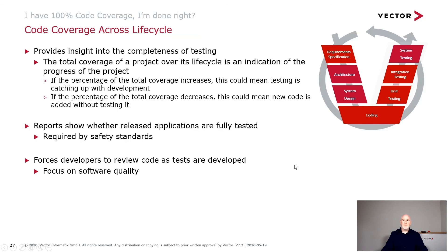We can also measure code coverage across the lifecycle of our project, giving a health indication of progress. If the percentage of coverage increases, it could mean testing is catching up with development; if it decreases, it could mean people are adding new code without testing it. A report can show whether the application being released is fully tested — typically required by safety standards. Monitoring coverage across the lifecycle can also help developers focus on software quality, testing and building quality into the code as they write it.